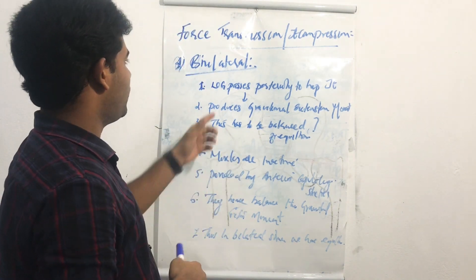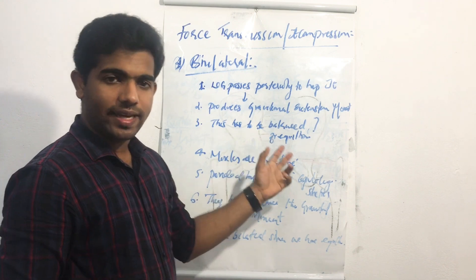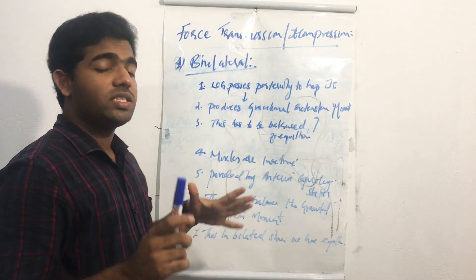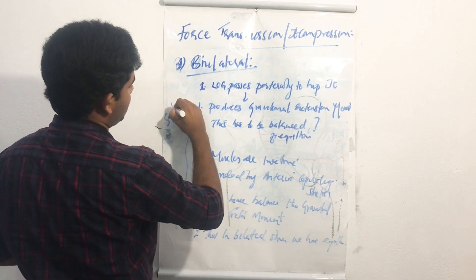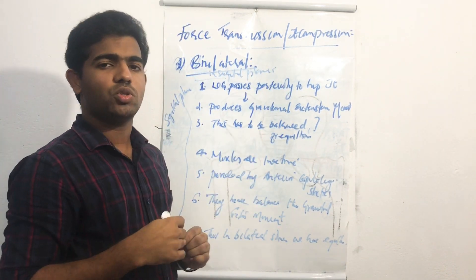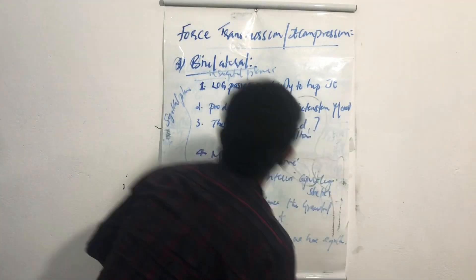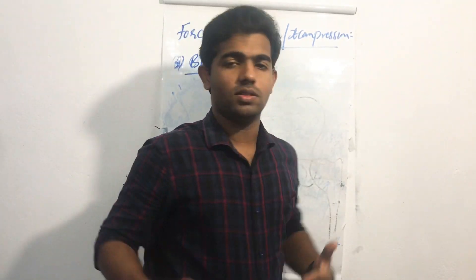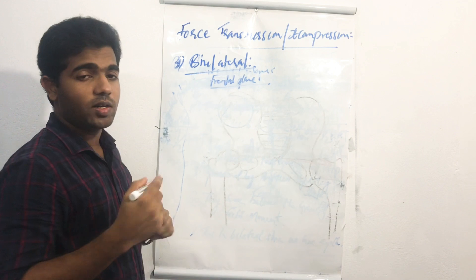To summarize the sagittal plane analysis: first, the line of gravity passes posteriorly and produces a gravitational extension moment; second, this must be balanced for equilibrium; third, muscles are inactive; fourth, balance is provided by the anterior capsular and ligament structures — hence equilibrium is achieved. Now we move to the frontal plane (coronal plane) analysis.